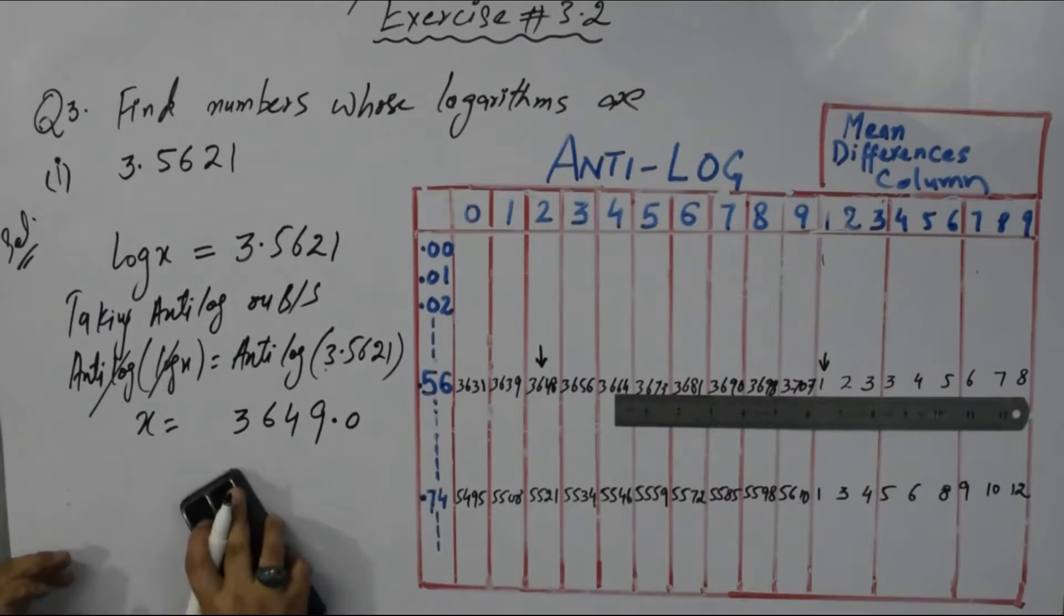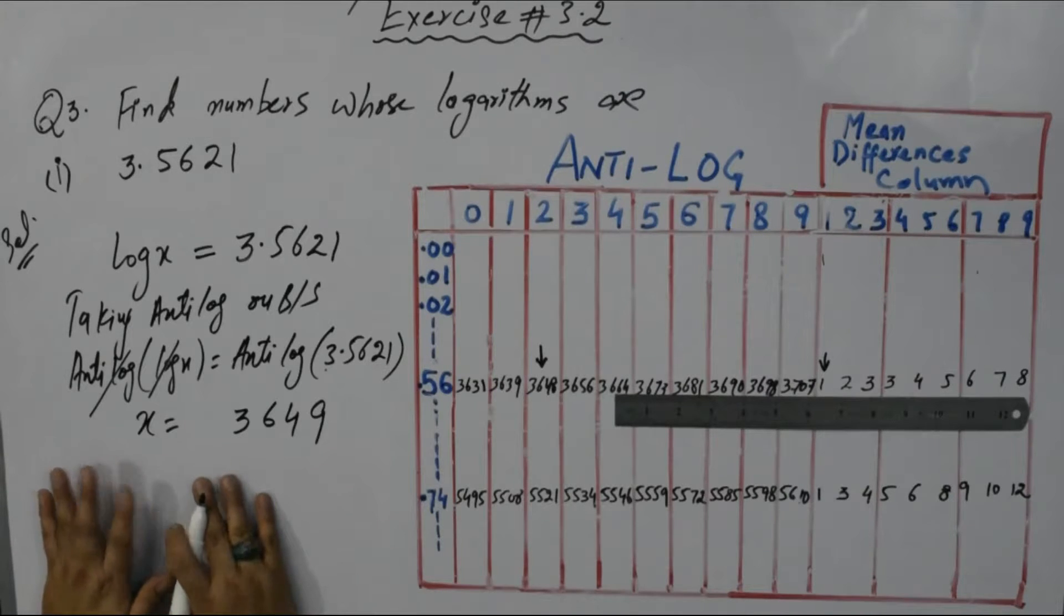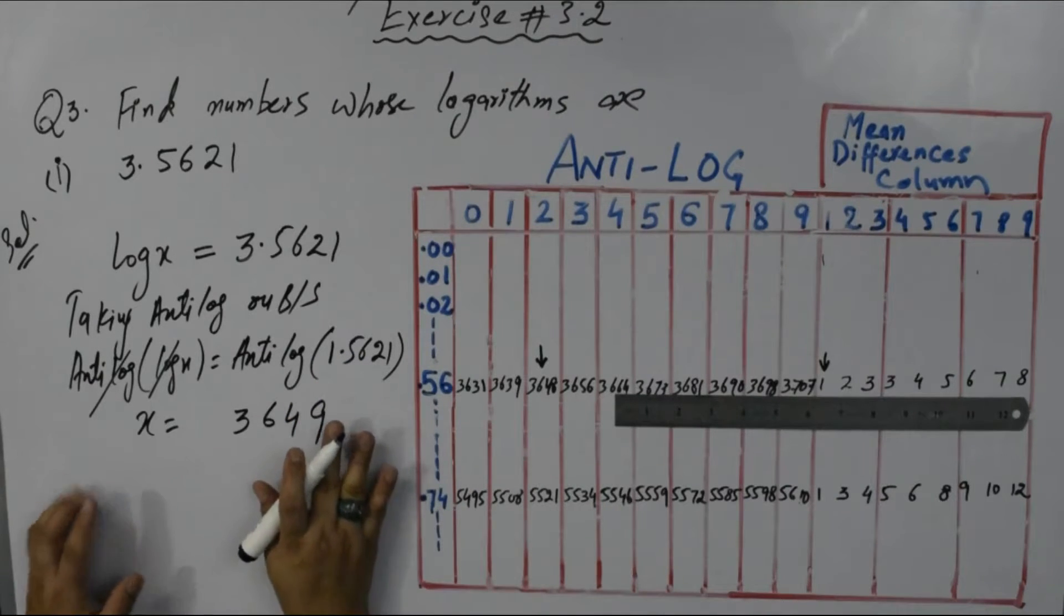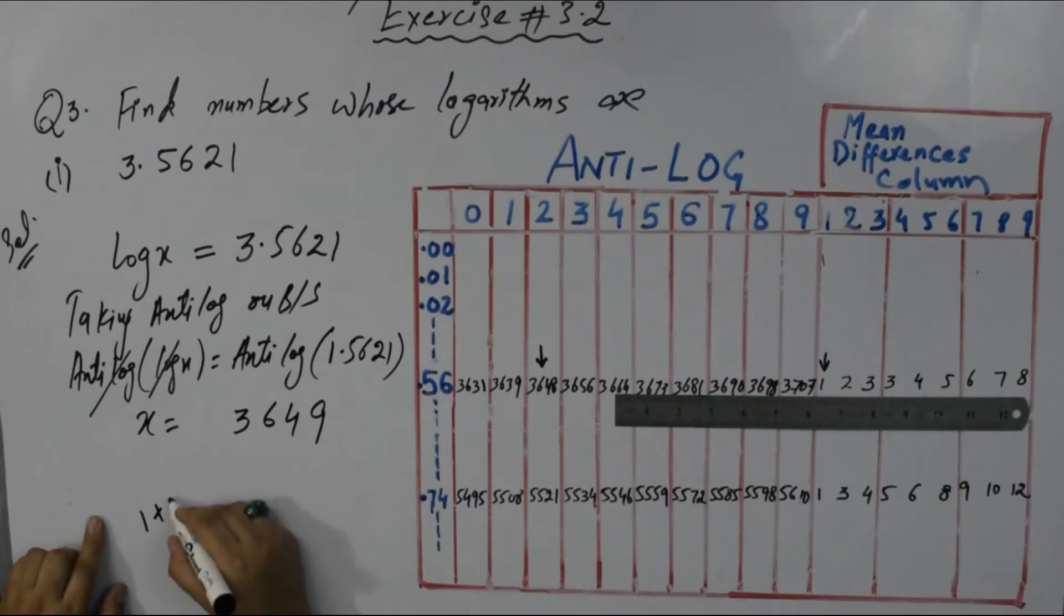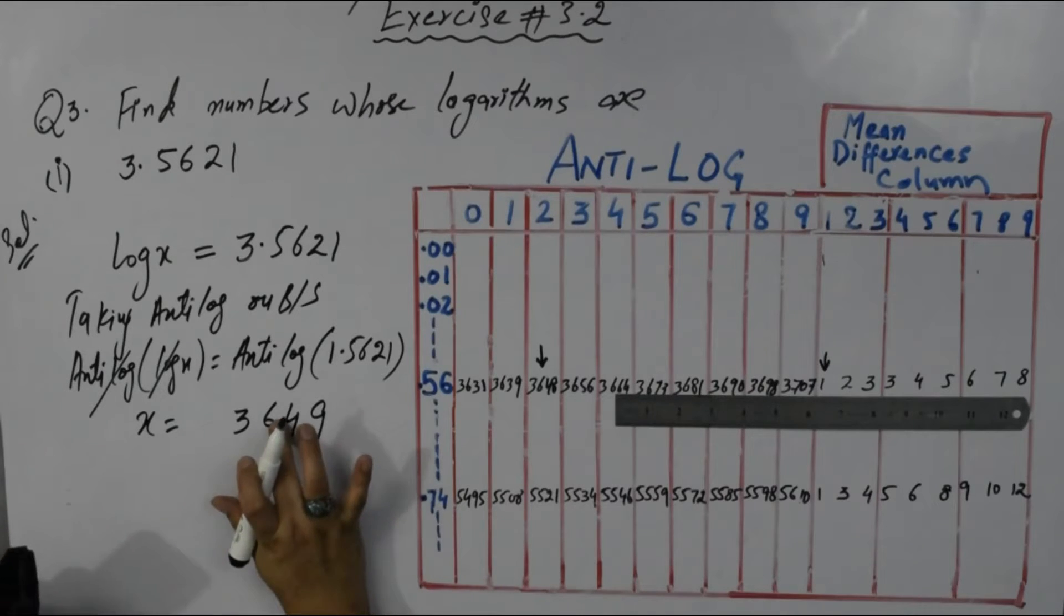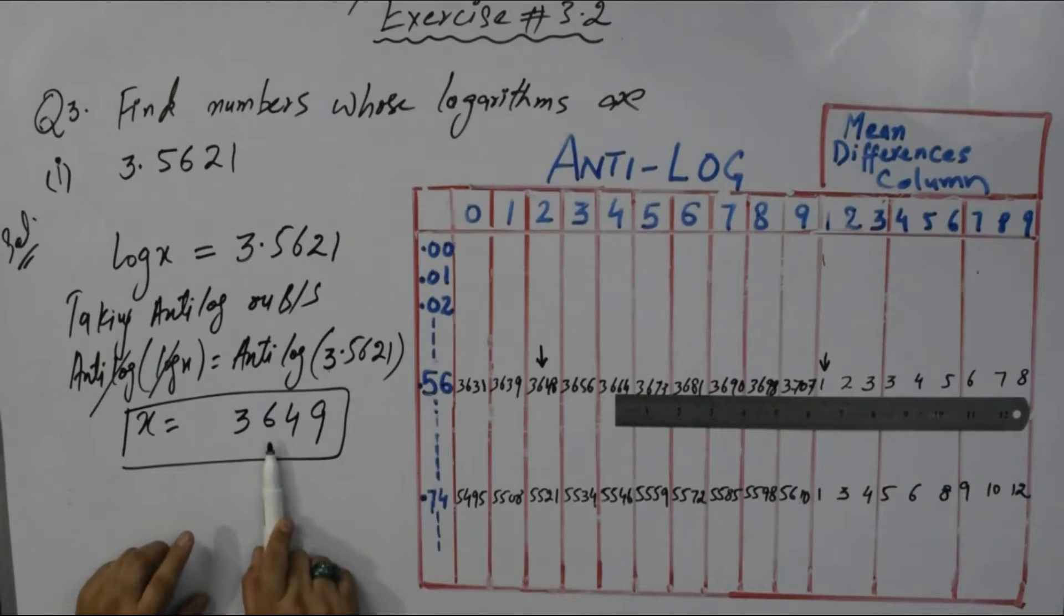Remember students, whenever your characteristic is positive you have to add one and then put decimal after that number. Let's suppose if my characteristic is 1, add one because it is positive, so it becomes 2. You will put decimal after two digits. If characteristic is 2 or 3, whatever, accordingly we proceed. This is the number, the unknown number whose log we were given. You can check it with calculator or by taking its log from log table.